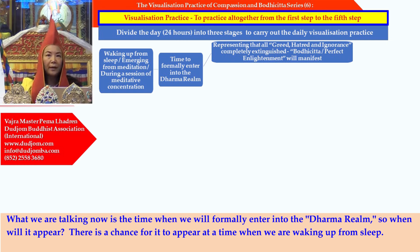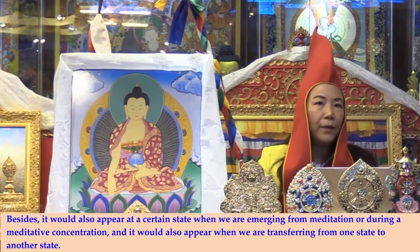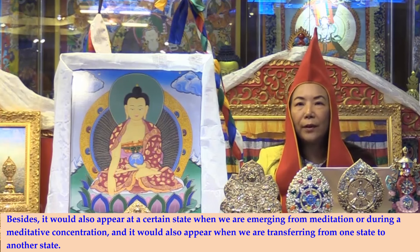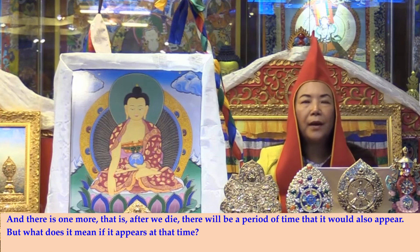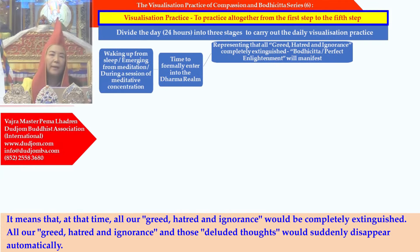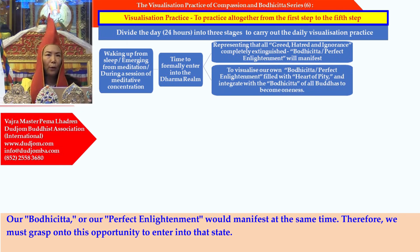When will the chance to formally enter into the Dharma realm appear? There is a chance when waking up from sleep, when emerging from meditation or during meditative concentration when transferring from one state to another, and also a period of time after we die. What does it mean if it appears at that time? It means that all our greed, hatred, and ignorance would be completely extinguished — all our deluded thoughts would suddenly disappear automatically, and our bodhicitta or our perfect enlightenment would manifest at the same time. Therefore, we must grasp this opportunity to enter into that state.